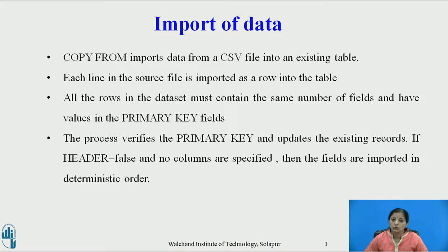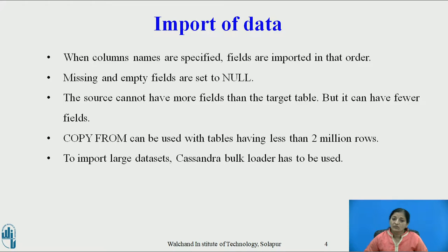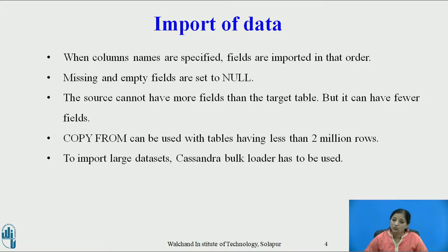If header is set to true, then the header row is seen in the table. If no columns are specified, fields are imported in deterministic order. When column names are specified, fields are imported in the order in which the columns are specified. Missing and empty fields are set to null. The source cannot have more fields than the target; it can have fewer fields. COPY FROM can be used with tables having less than 2 million rows.